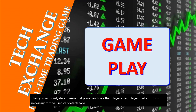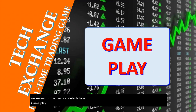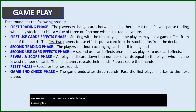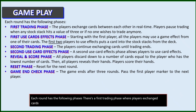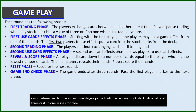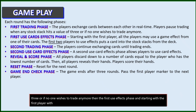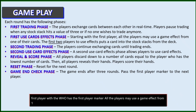Game play. Each round has the following phases. There's a first trading phase, where players exchange cards between each other in real time. Players pause trading when any stock stack hits a value of three or if no one wishes to trade anymore. Then, the first use effects phase, and starting with the first player who has the first player marker, all the players may use a game effect from one of their cards in their hand.